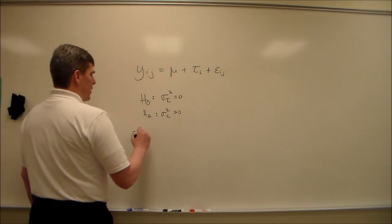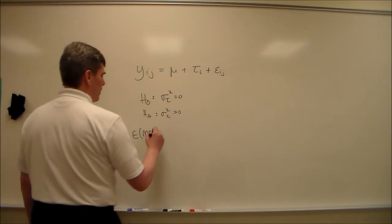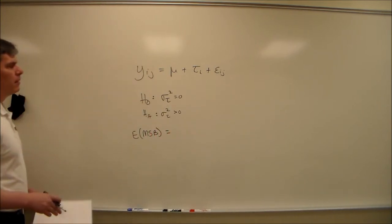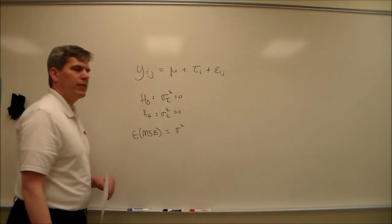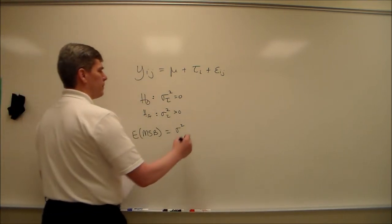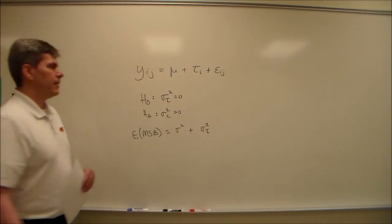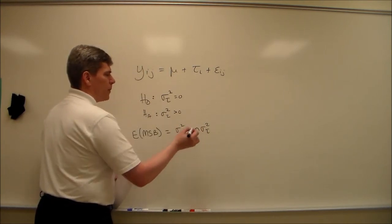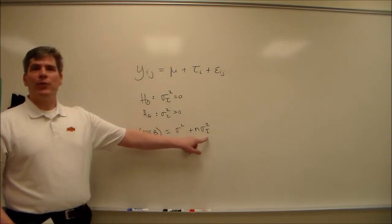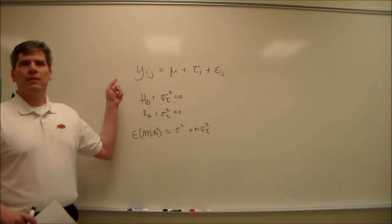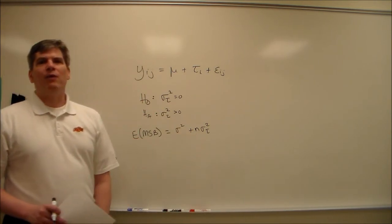So expected mean squared for the between, that's just the variance of that epsilon, which we'll call sigma squared, plus that variance of tau, and that's an n. Remember, n is the sample size within each of the groups. And the reason why we're multiplying by n is because this sigma squared tau affects the whole equation one time for every measurement within that group. And again, since there's no subscript on the n, we're assuming a balanced design.